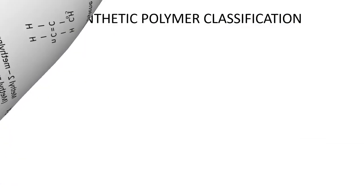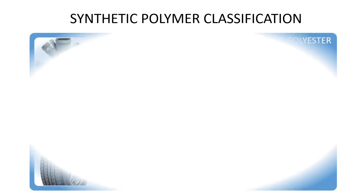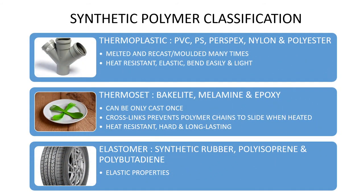Now let's understand the three synthetic polymer classifications based on their properties: thermoplastic, thermoset, and elastomers. Thermoplastic is a plastic which can be recast or molded many times upon heating. During heating, the polymer chains slide against one another and the thermoplastic melts. PVC, polystyrene, perspex, polyester, and nylon are classified as thermoplastics.